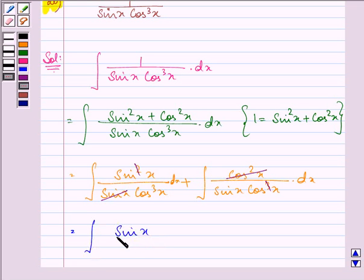sin x divided by cos cube x dx plus 1 over sin x cos x dx.